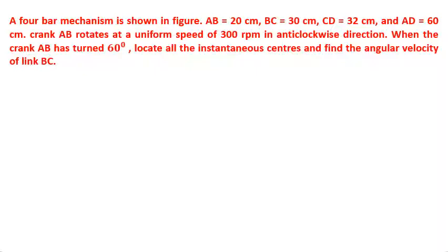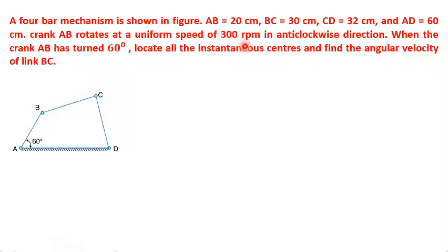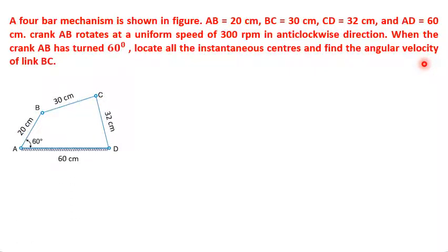Let us consider the first problem on a four bar mechanism. The length of AB is 20 cm, BC is 30 cm, CD is 32 cm, and AD is 60 cm. Here AB is the crank rotating at a uniform speed of 300 rpm in the counterclockwise direction. When the crank AB turns 60 degrees, we must locate all instantaneous centers and find the angular velocity of link BC, that is omega BC.